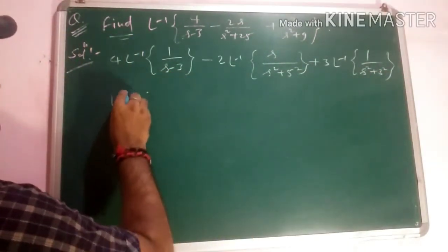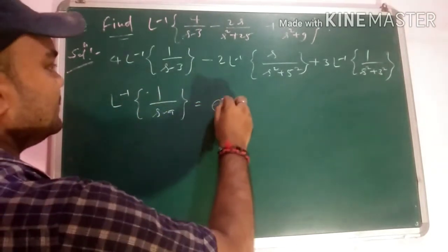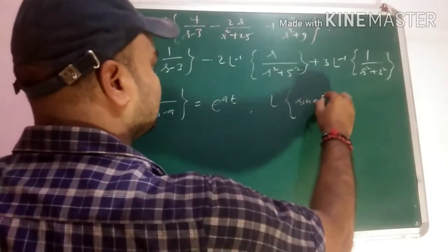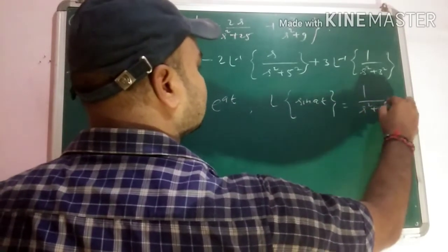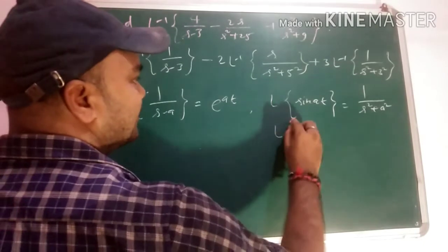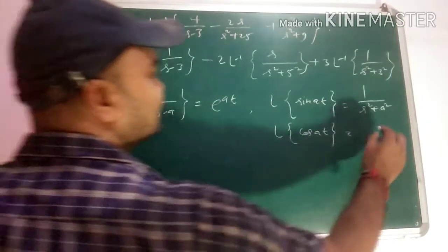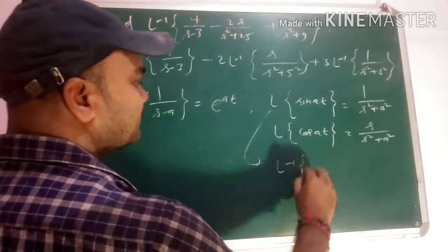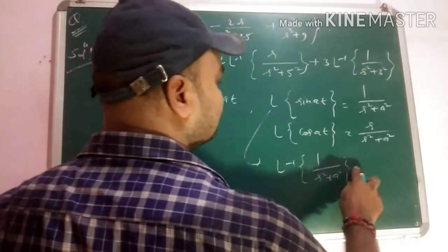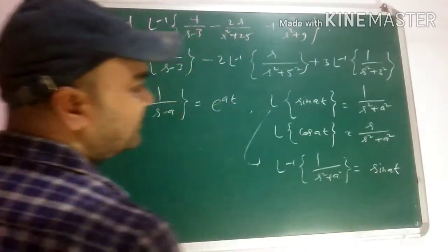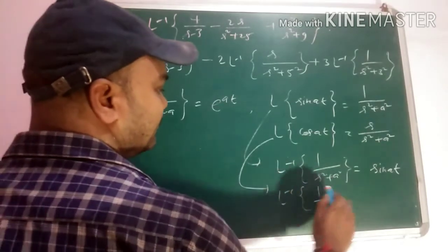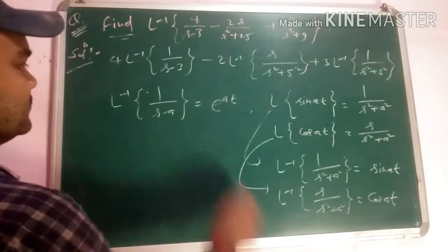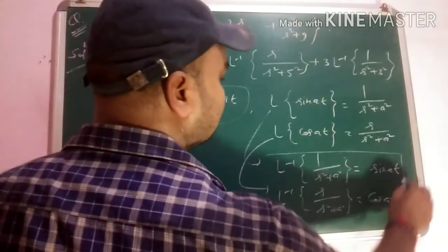Now we recall the key relations: L inverse [1/(s-a)] = e^(at), L inverse [1/(s²+a²)] = sin(at)/a (equivalently Laplace of sin(at) = a/(s²+a²)), and L inverse [s/(s²+a²)] = cos(at). We will use all three of these relations to find the answer.